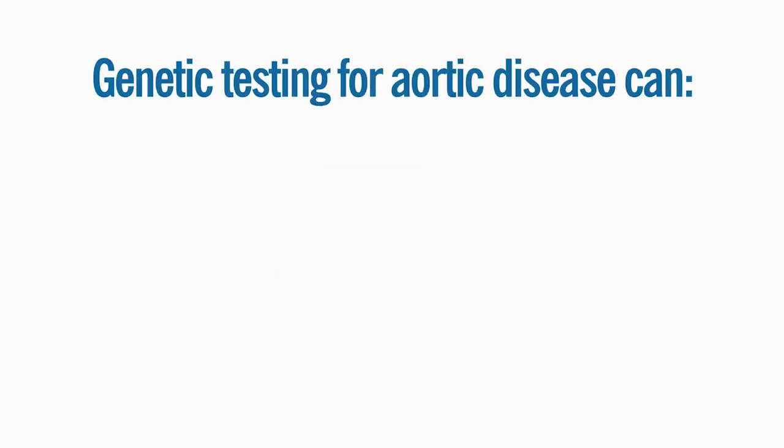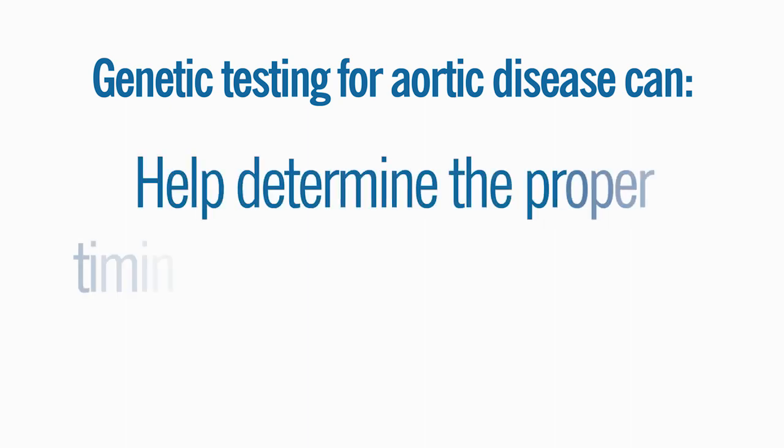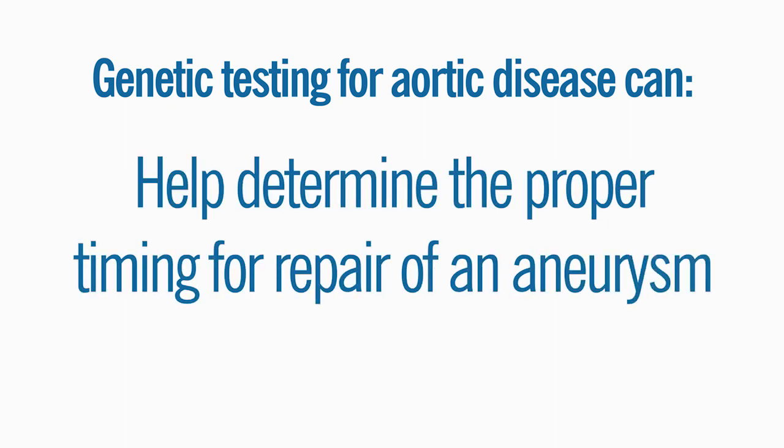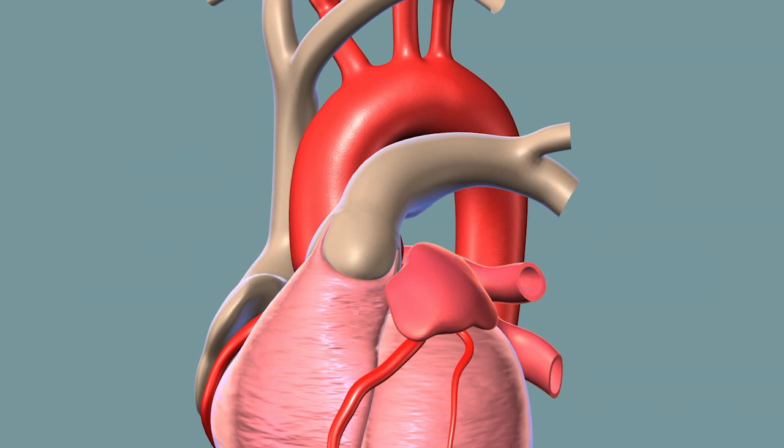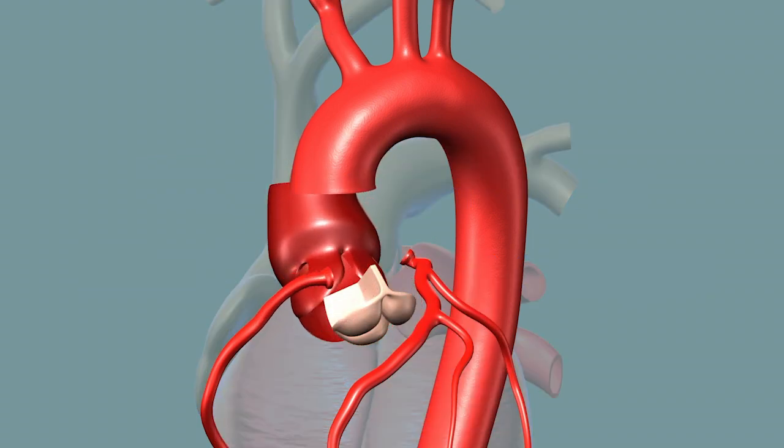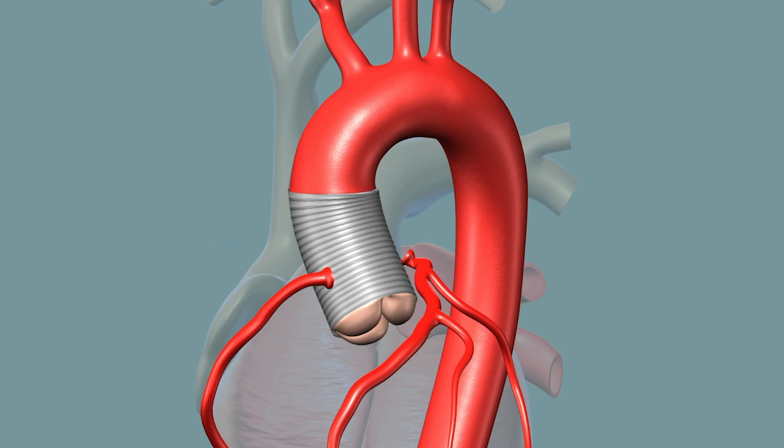Genetic testing for individuals with aortic disease can help determine the proper timing for repair of an aneurysm. People with hereditary aortic disease usually need surgery at an earlier stage than people who don't have a genetic cause.